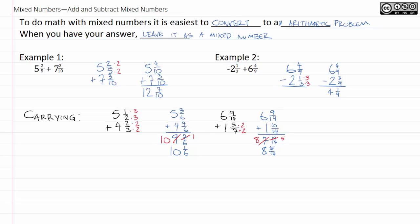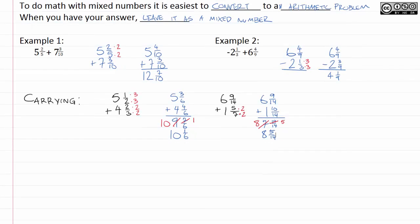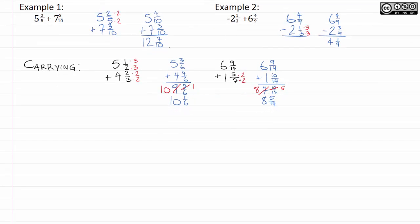Another variation that you're going to need to watch out for is something called borrowing. And borrowing is a lot like carrying where we have to manipulate things slightly to make them work out the way we want. To borrow, and again, this is very similar to what you would do when you would do subtraction by hand. So, let's take a look at an example of this.